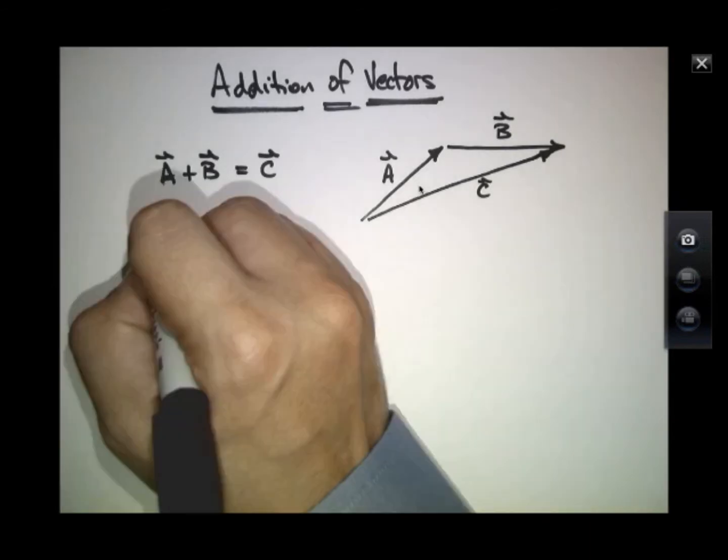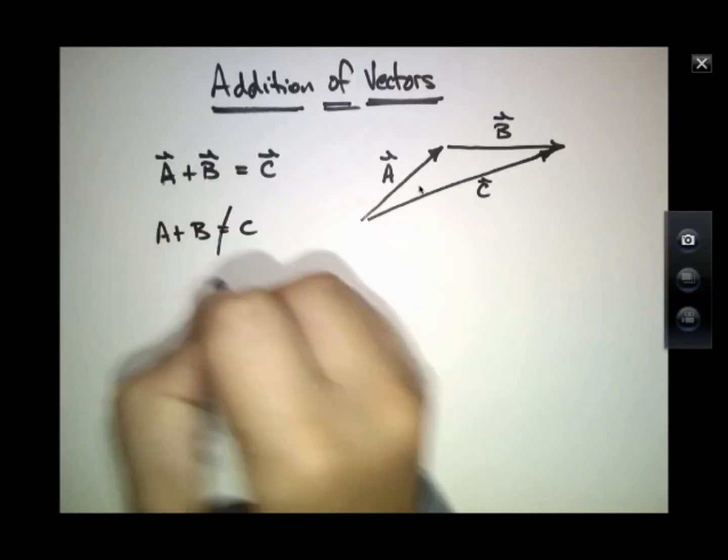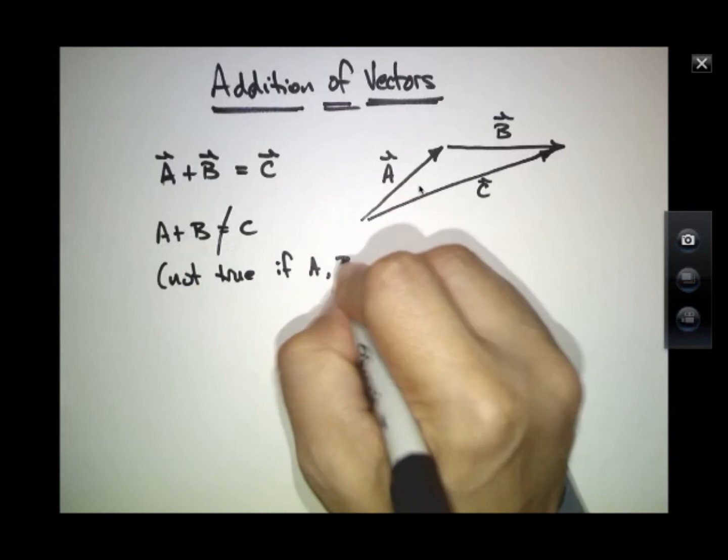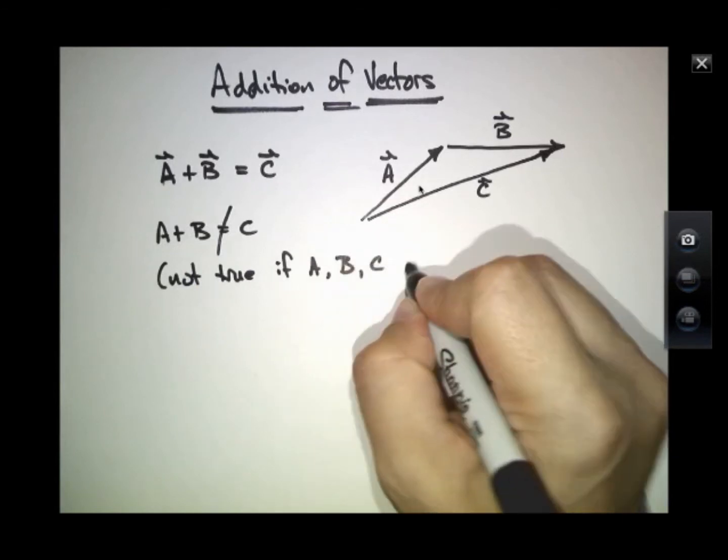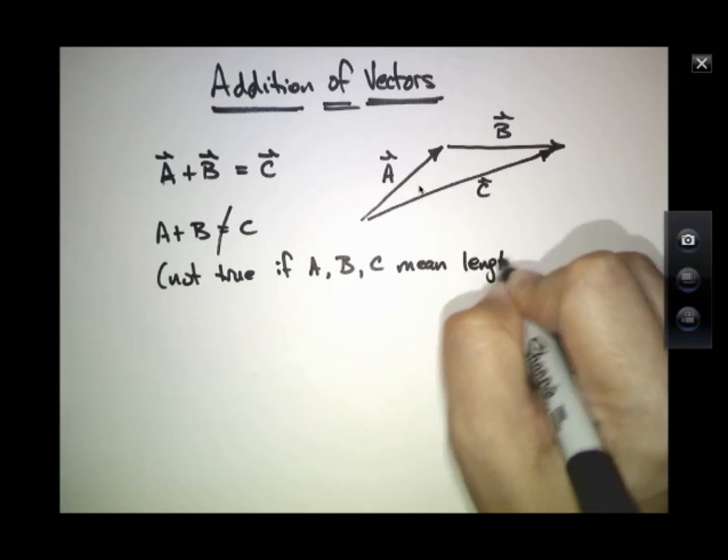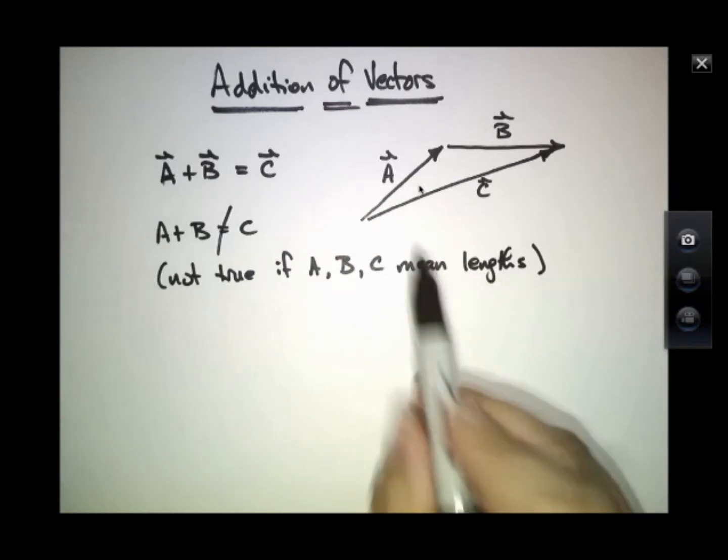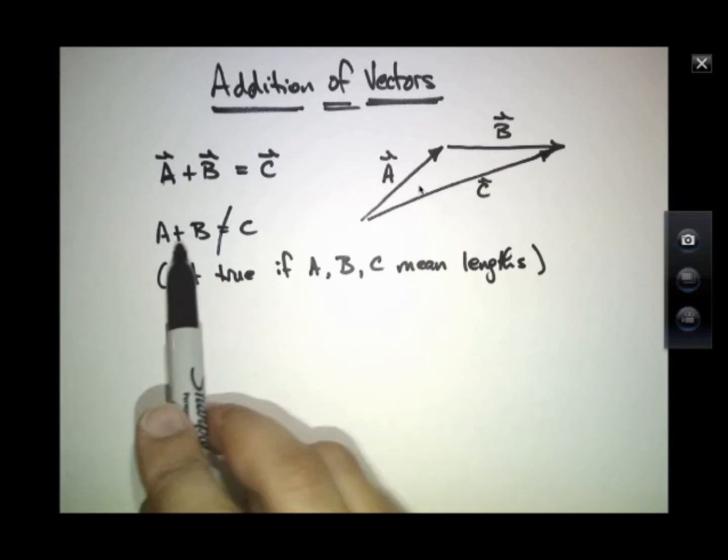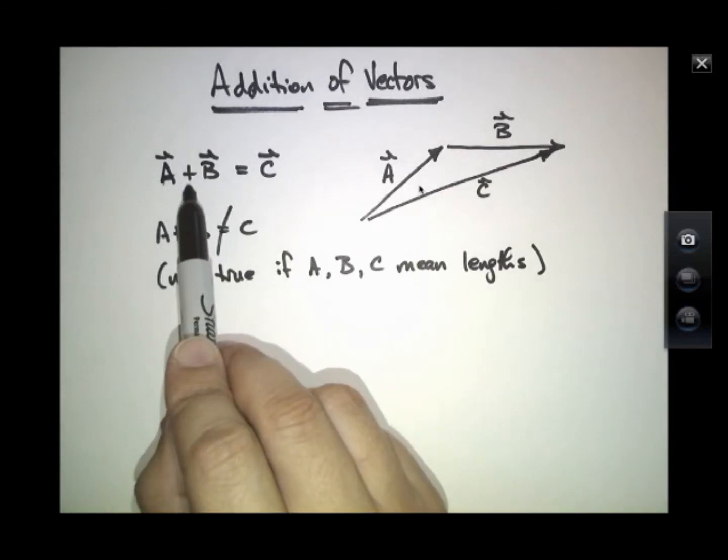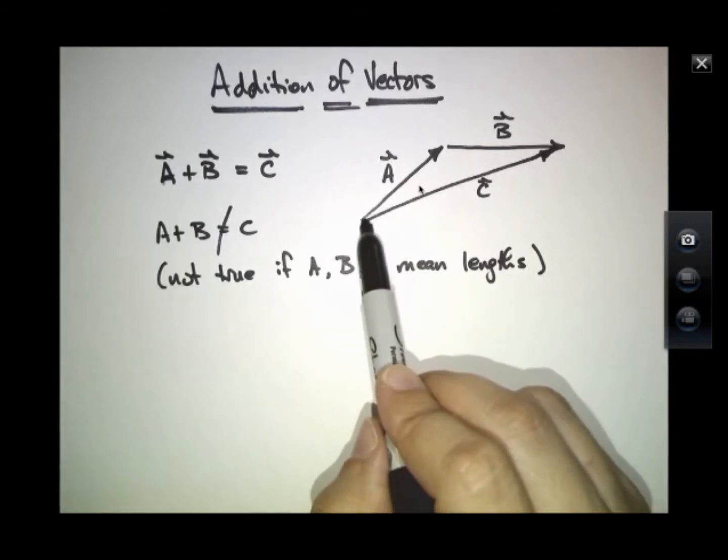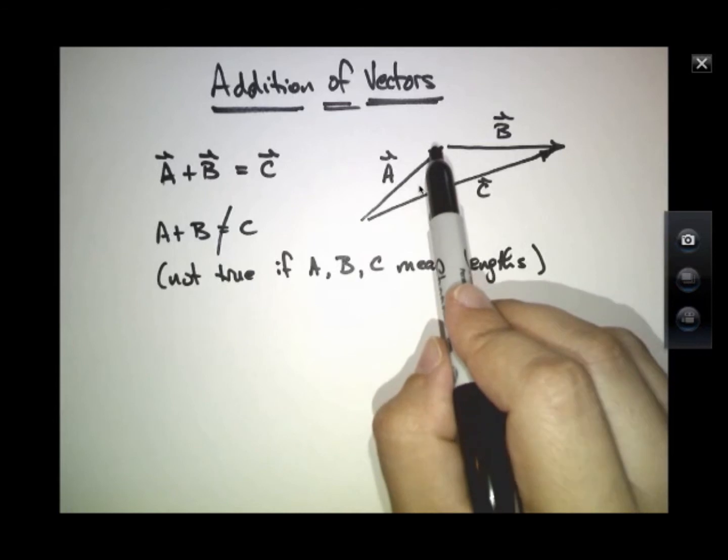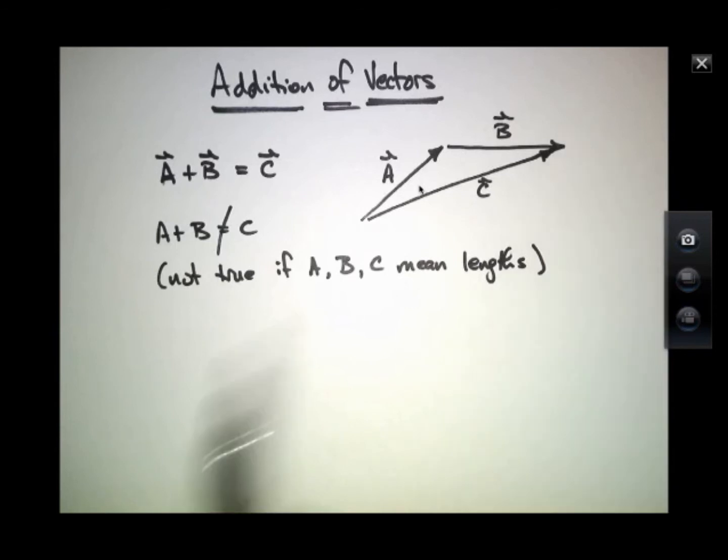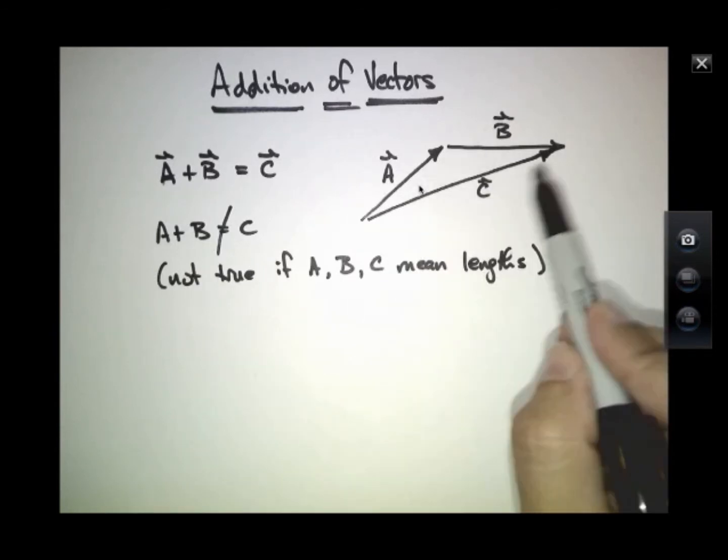Notice that it's not the case that A plus B equals C if you mean by A, B, and C right now the lengths. In this picture, that length plus that length is much more than this length of C. So we don't mean the same thing at all when we put a plus sign here in a vector addition sign. This vector addition means the successive translation by that amount and direction plus the operation of doing that translation by that amount and direction. And the sum of A plus B is this new vector, C.